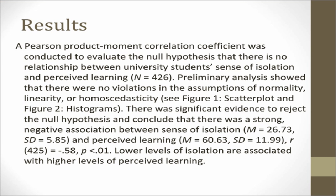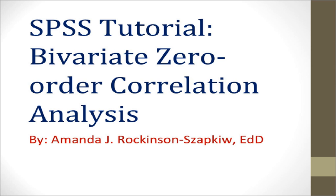Now that we have looked at the SPSS output in a step-by-step fashion, let's look at how we use this output to write an APA results section. Here's an example of one way that you could write your results section from the SPSS output that we looked at. Thank you for taking the time to work through this SPSS tutorial for bivariate correlations. You should now know how to conduct a bivariate correlation using SPSS and use the SPSS output to write an APA results section.